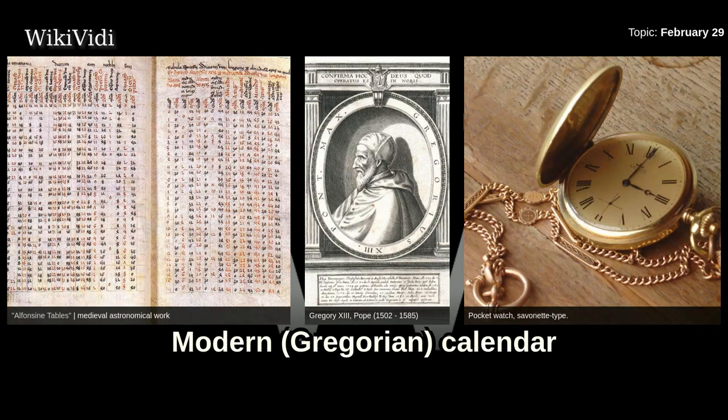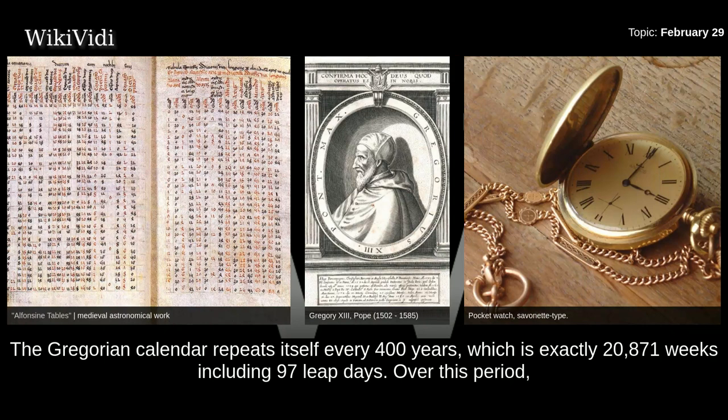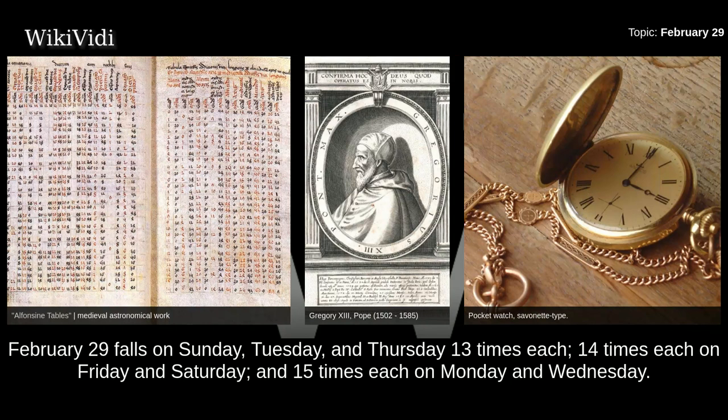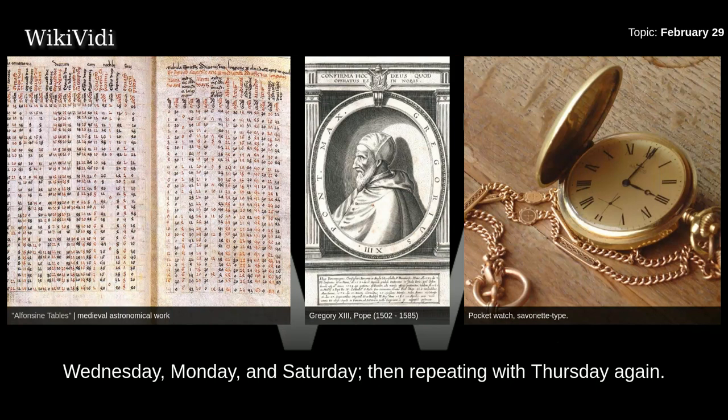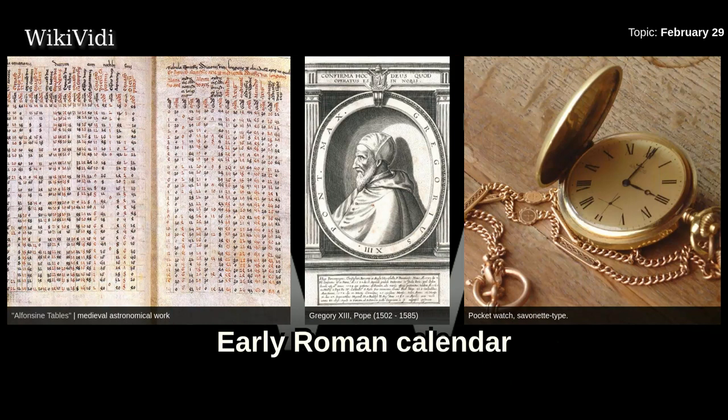The Gregorian calendar repeats itself every 400 years, which is exactly 20,871 weeks including 97 leap days. Over this period, February 29th falls on Sunday, Tuesday, and Thursday 13 times each; 14 times each on Friday and Saturday; and 15 times each on Monday and Wednesday. Excepting when a century mark that is not a multiple of 400 intervenes, consecutive leap days fall in order: Thursday, Tuesday, Sunday, Friday, Wednesday, Monday, and Saturday, then repeating with Thursday again.